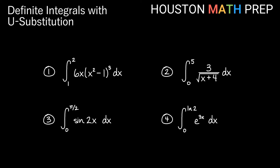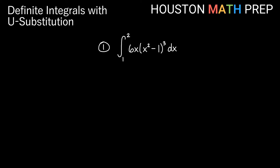Here we've shown the four examples that we're going to work in this video. If you have one that you want to jump to in particular and skip right to it, that's great. Otherwise, just work alongside us and we'll get right to it. Our first integral: the integral of 6x times the quantity (x² − 1) all cubed dx from x = 1 to x = 2.